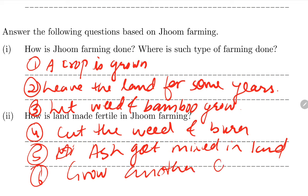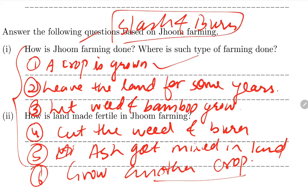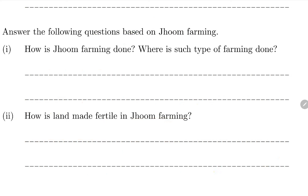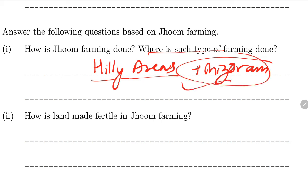Zoom farming is done in the state of Mizoram - also called slash and burn or Jhoom farming. How is the land made fertile in Zoom cultivation? By mixing the ash of the burned weeds into the land. The ash acts as a natural fertilizer - insects don't attack and fertility is maintained. This is important to remember.